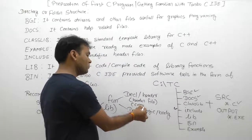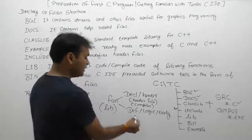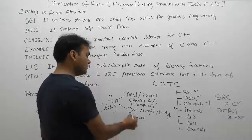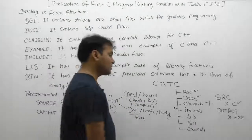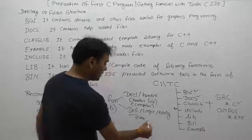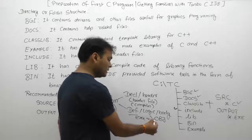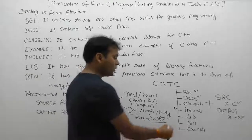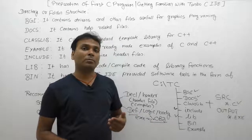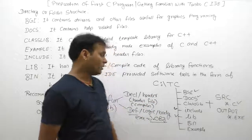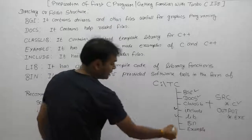Header files contain only declarations. Based on declarations, compilation is possible — they provide help to the compiler. But during execution, definitions are also required. Definitions are supplied in the form of predefined object (.obj) files. All predefined object code or compiled code of predefined functions is available inside the Lib directory.